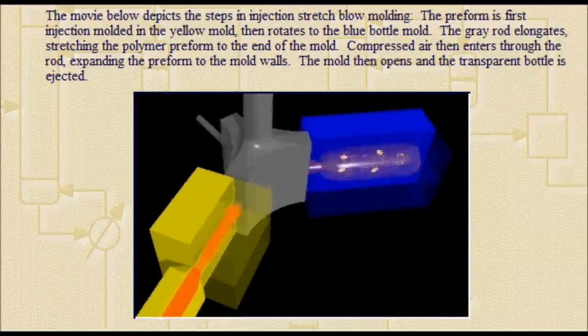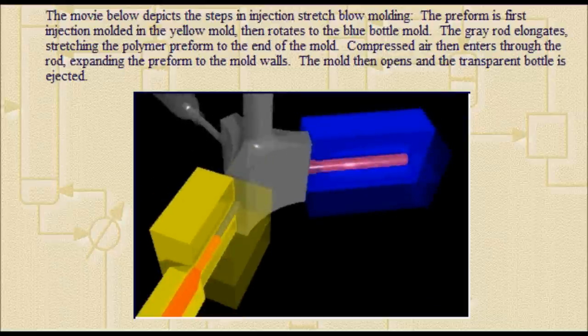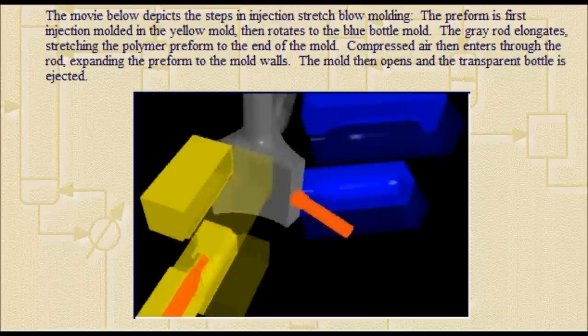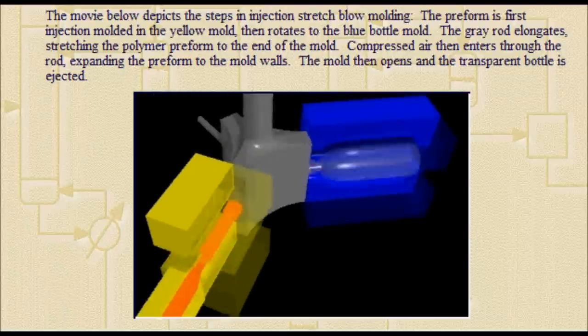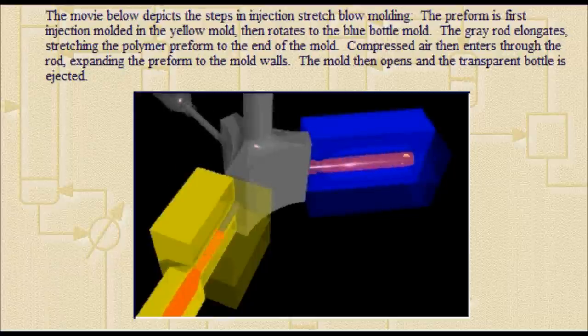The gray rod elongates, stretching the polymer preform to the end of the mold. Compressed air then enters through the rod, expanding the preform to the mold walls. The mold then opens and the transparent bottle is ejected.